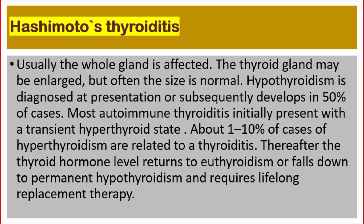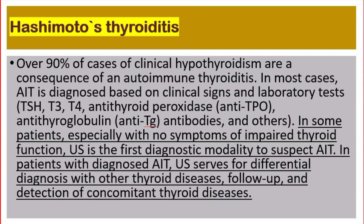About 1 to 10 percent of cases of hyperthyroidism are related to a thyroiditis. Thereafter, the thyroid hormone level returns to normal or falls down to permanent hypothyroidism and requires lifelong replacement therapy. Over 90 percent of cases of clinical hypothyroidism are a consequence of autoimmune thyroiditis. In most cases, autoimmune thyroiditis is diagnosed based on clinical signs and laboratory tests.